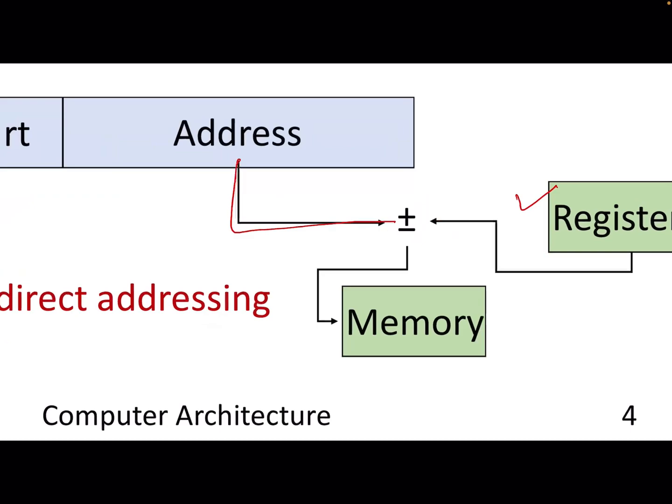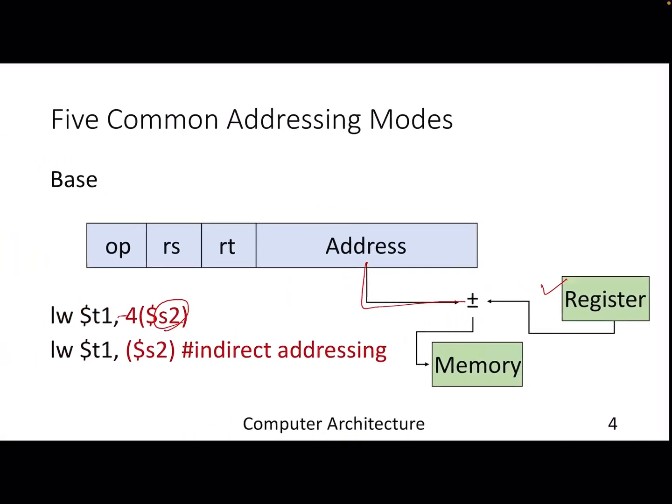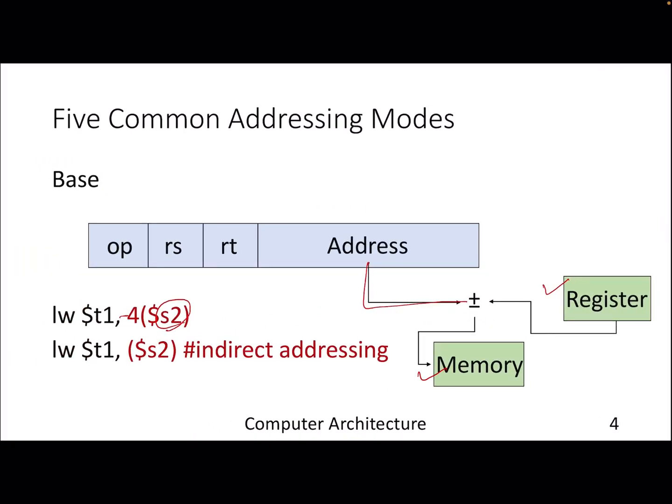If I remove the notion of this particular constant or address, then this becomes reading the content of register s2, and that will give you the address to get the operand from memory. That is also known as indirect addressing because this register is actually providing an indirection to get the data from memory.